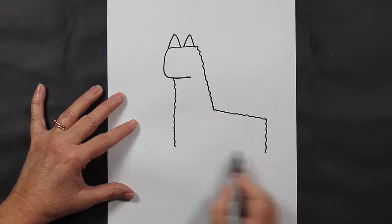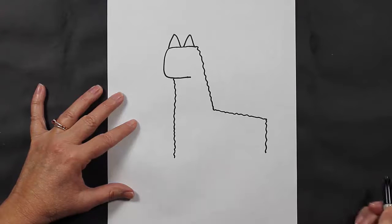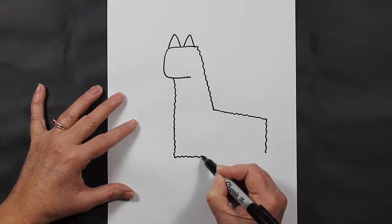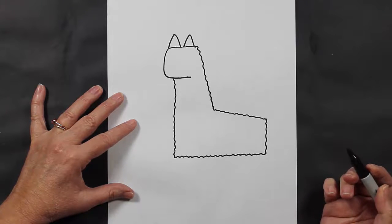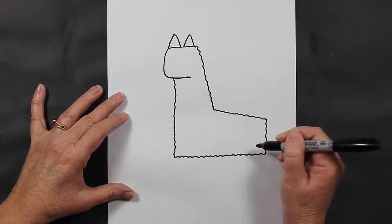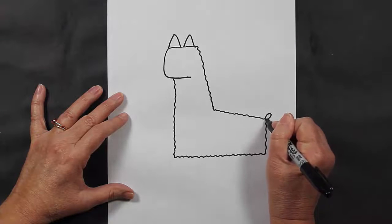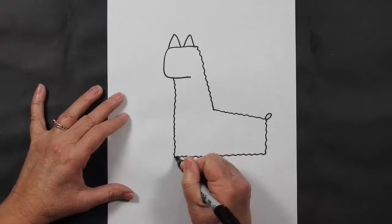...should be about the same length. They should end at approximately the same spot, so I need to bring this down a little bit more. Now we're going to come along the bottom with a squiggly line, and that's going to be our llama's body. They're kind of fluffy. Let's make a little loopy tail and some blocky feet.